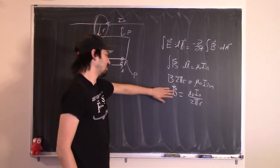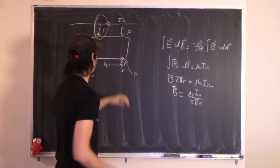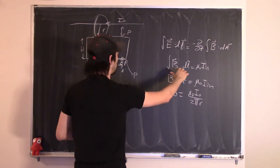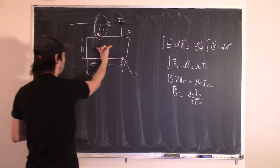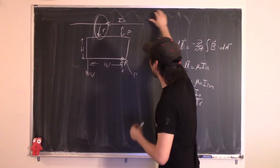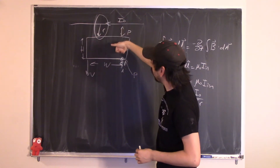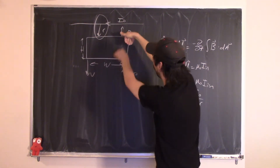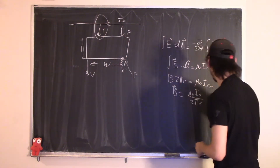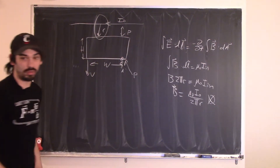This is a vector, so we need to find its direction. Using the right-hand rule: point the thumb in the direction of the current, and the fingers wrap in the direction of the magnetic field. Below the wire, the fingers point out, so the magnetic field points out in the region where the loop is.